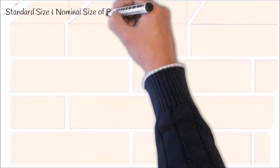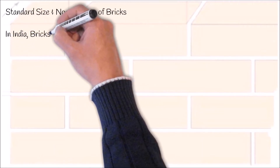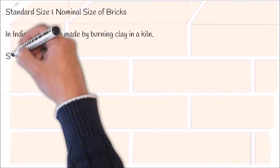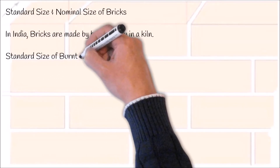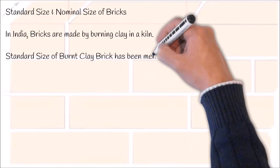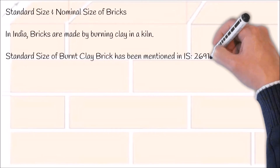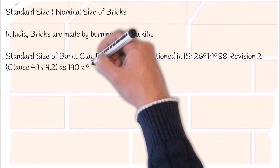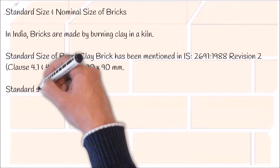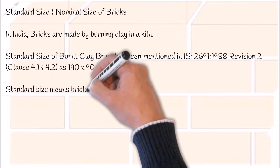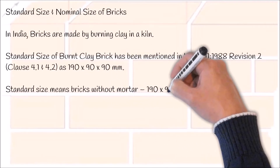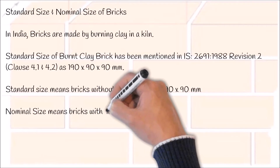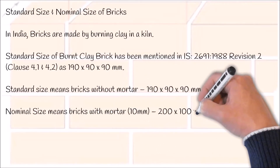Standard size and nominal size of bricks. In India, bricks are made by burning clay in a kiln. The standard size of burnt clay brick has been mentioned in Indian Standard Code 2691:1988 Revision 2, Clause 4.1 and 4.2, as 190 x 90 x 90 mm. Standard size means bricks without mortar: 190 x 90 x 90 mm. Nominal size means bricks with mortar (10 mm): 200 x 100 x 100 mm.